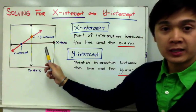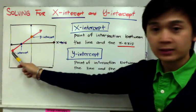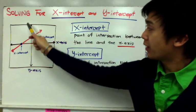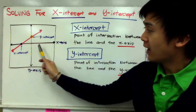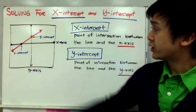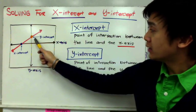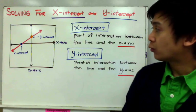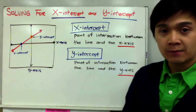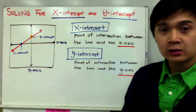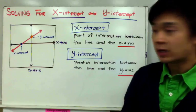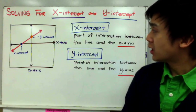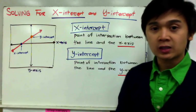If you have the graph of a linear equation, the line will intersect the y-axis and the x-axis most often than not. Finding the y-intercept and x-intercept will help us graph the equation of a line, because by theorem we need two points to create a line. So we're going to find the x and y-intercept of a given equation of a line.